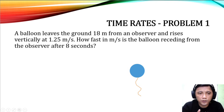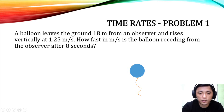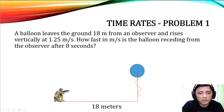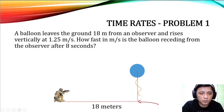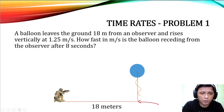We have a balloon which is rising vertically. For this problem we will consider only vertical motion and will not consider horizontal motion of the balloon — this is just for theoretical problem solving purposes. The observer is 18 meters away from where the balloon took off. The question is how fast in meters per second is the balloon receding from the observer after eight seconds.